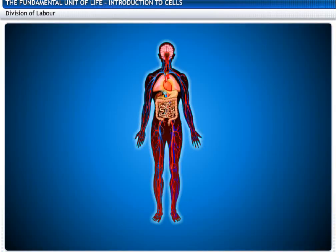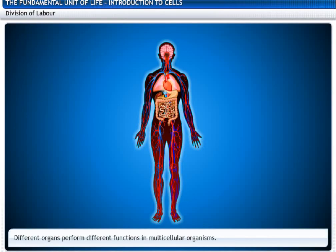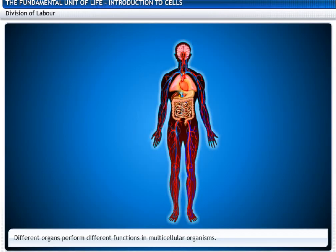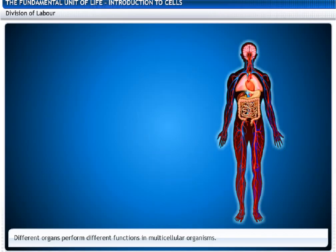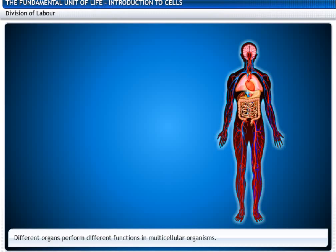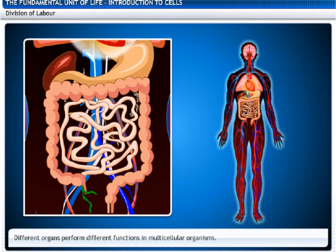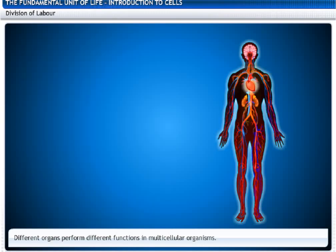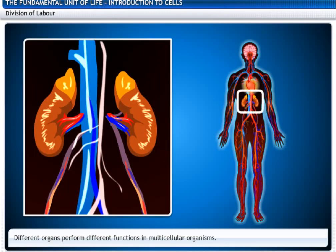On the other hand, different organs perform different functions in multicellular organisms. For example, the human body has a heart to pump blood, a stomach to digest food, and kidneys to excrete waste.